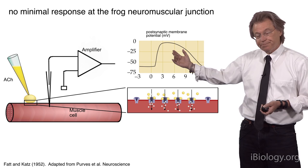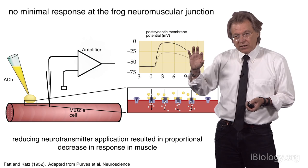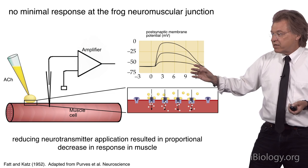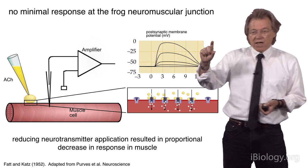He then found that as he reduced the amount of neurotransmitter released onto the muscle, he saw a proportional decrease in the response, and he could continue that until the response was zero. In other words, there is no minimal response for a synapse's response to neurotransmitter when applied externally.